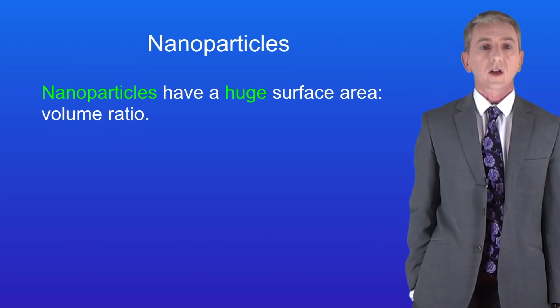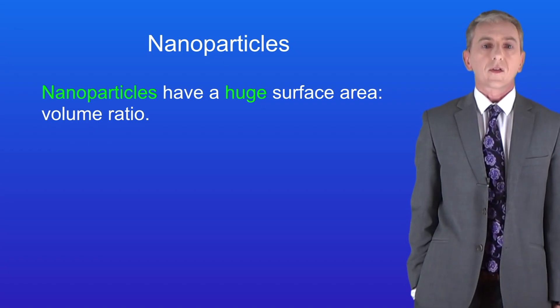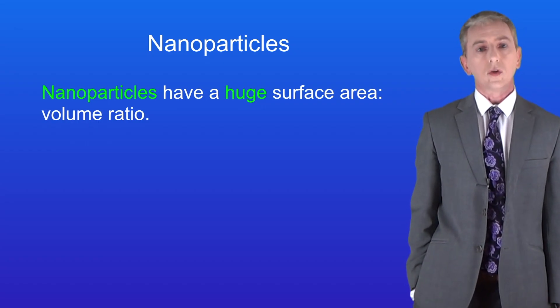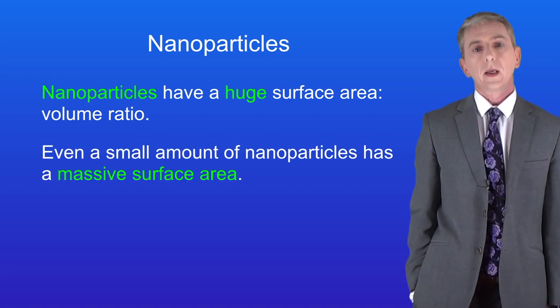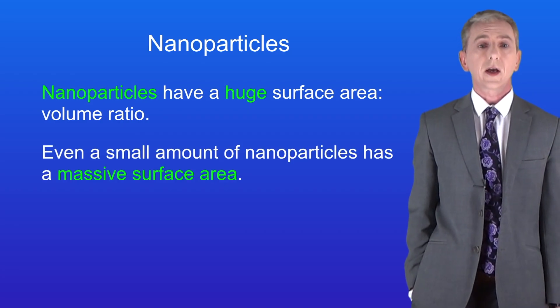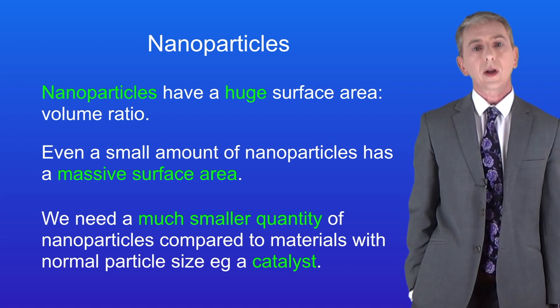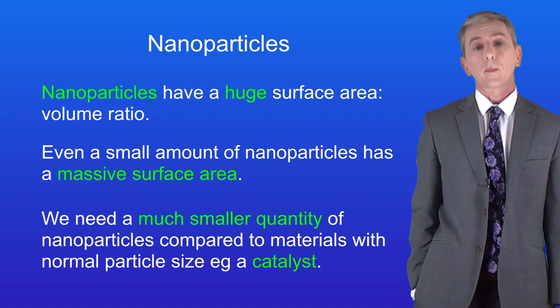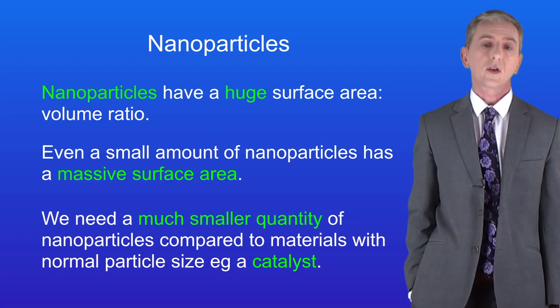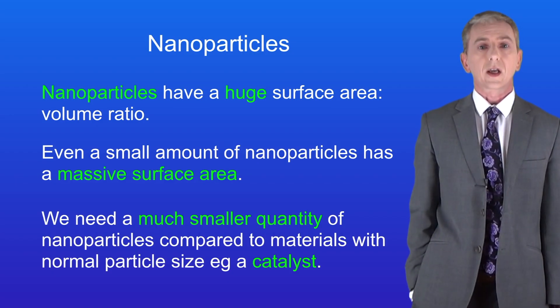So if we go back to the particles we looked at before, we can see that nanoparticles have a huge surface area to volume ratio. In other words, even a small amount of nanoparticles has a massive surface area. This means that we need a much smaller quantity of nanoparticles compared to materials with normal particle size, for example when we're using a catalyst.